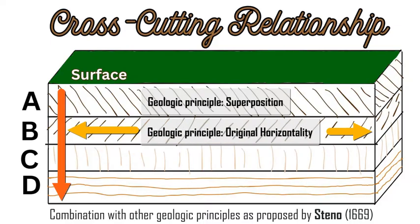Then we have the law of original horizontality. Sediments are laid down and accumulated, deposited through gravity in a horizontal flat strata bed, and there we have sedimentation and lithification occurring.